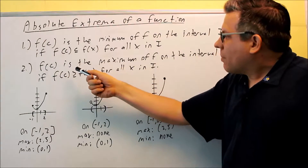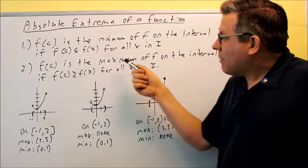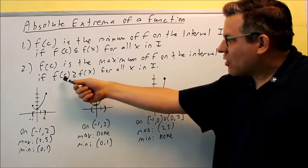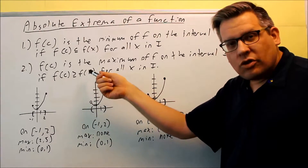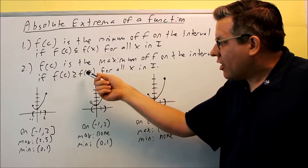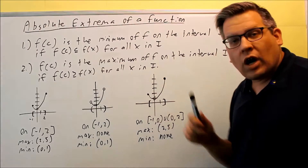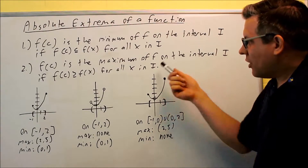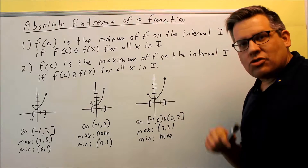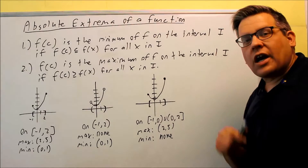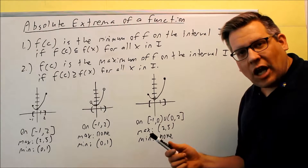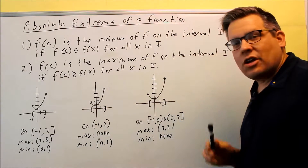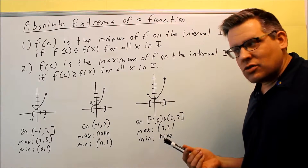f of c is an absolute max if that y value is greater than or equal to any of the other y values — then that y value is considered the absolute maximum on the interval. Now, there are situations where you may not always have an absolute max or a min, so I have three different graphs that illustrate some different situations.